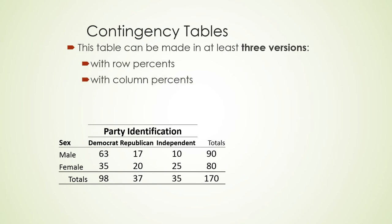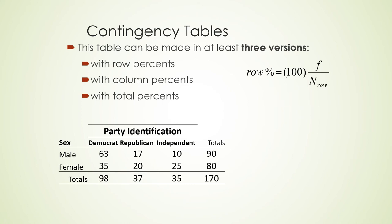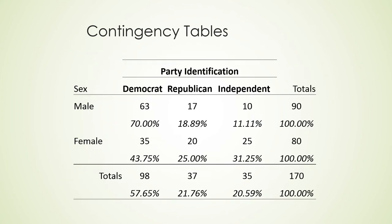This table could be made with different kinds of percents. We saw total percents, but there are also much more useful things called row percents and column percents. This is a study of 170 participants who identified with particular parties and had a particular sex — male or female. A row percent is the frequency of a particular observation divided by the number of observations in that row, multiplied by 100. A column percent is the frequency divided by the number in the column, times 100. Total percent uses the total number in the entire study.